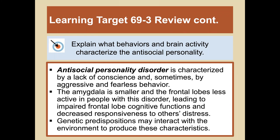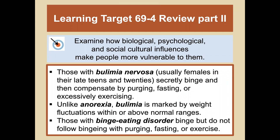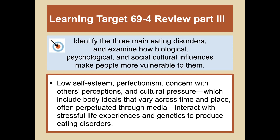Genetic predispositions interact with the environment to produce antisocial characteristics. Anorexia, bulimia, and binge eating are the three main eating disorders. Despite being significantly underweight, people with anorexia continue to diet because they view themselves as fat. Those with bulimia secretly binge and then compensate by purging, fasting, or excessively exercising — unlike anorexia, bulimia involves weight fluctuations within or above normal ranges. Those with binge eating disorder binge but do not purge, fast, or exercise to compensate. Low self-esteem, perfectionism, concern with others' perceptions, and cultural pressure interact with stressful life experiences and genetics to produce eating disorders.